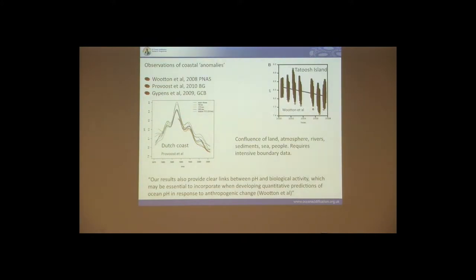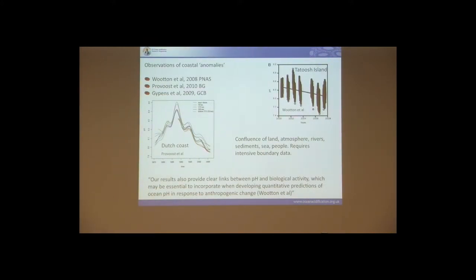A paper by Guy Penz et al. shows how this is strongly influenced by rivers. It's not surprising when you're dealing with places where land, atmosphere, rivers, sediments, sea, and people come together. My first plea is that we really do need intensive boundary data to constrain our systems. As Tim's paper put it: 'Our results provide clear links between pH and biological activity which may be essential to incorporate when developing quantitative predictions of ocean pH in response to anthropogenic change.' I couldn't agree more.